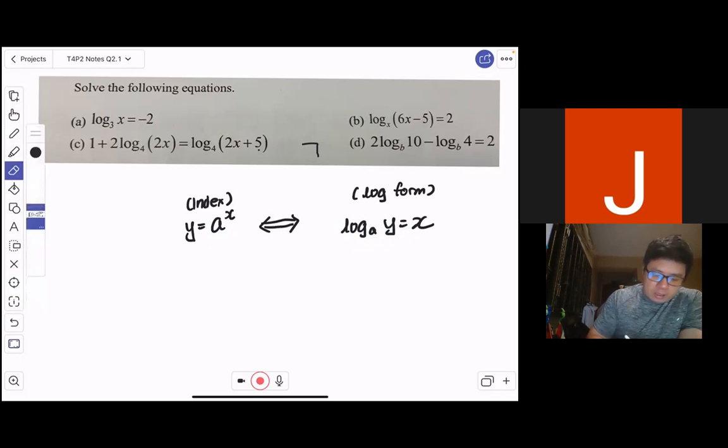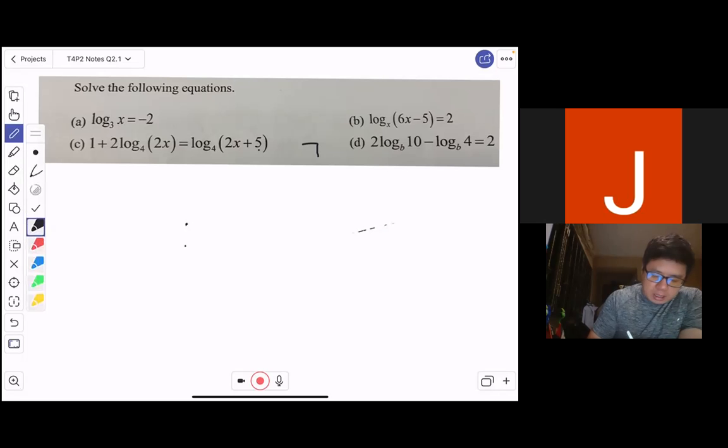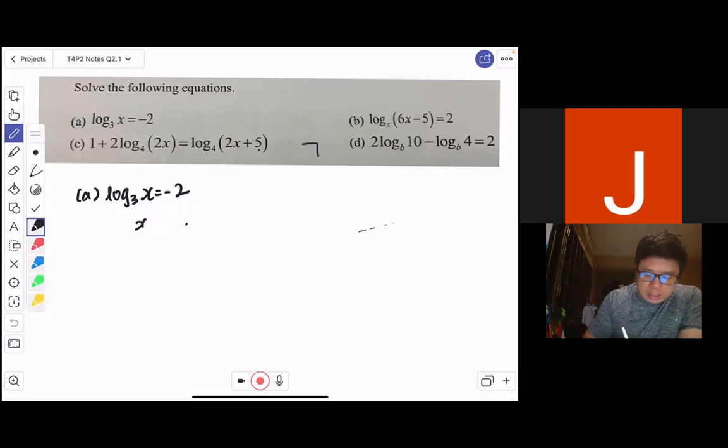So for (a), let's look at how we go about doing it. You can see that quite easily, right? If I were to just have log₃(x) = -2, if I were to bring my base 3 over to change it back into the index form, this will give me x = 3^(-2).